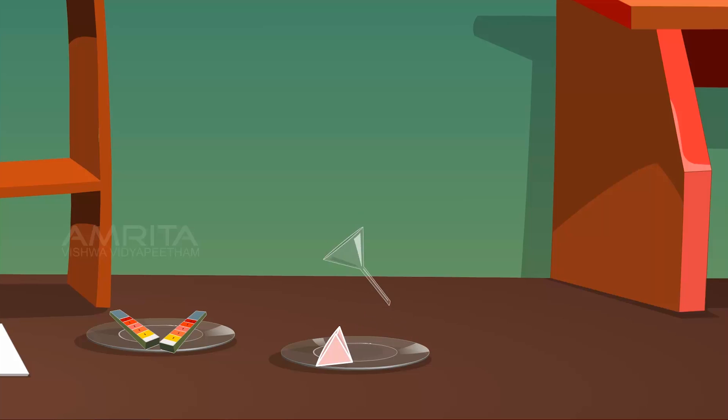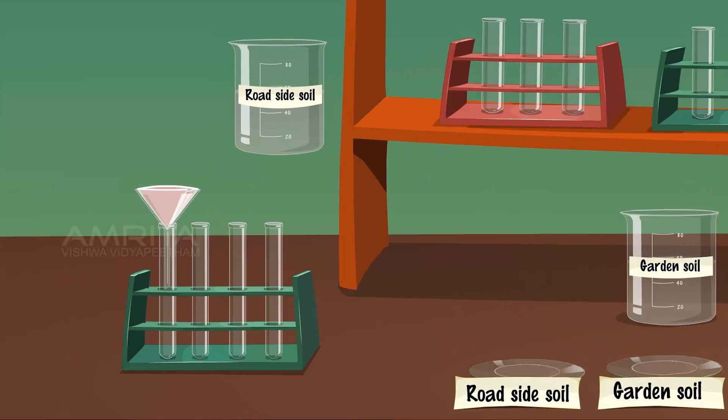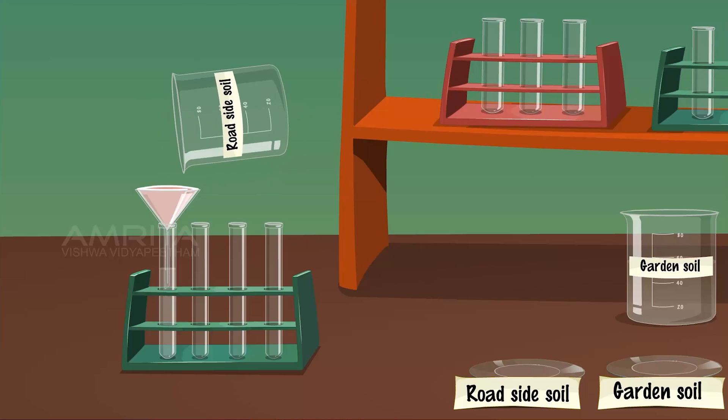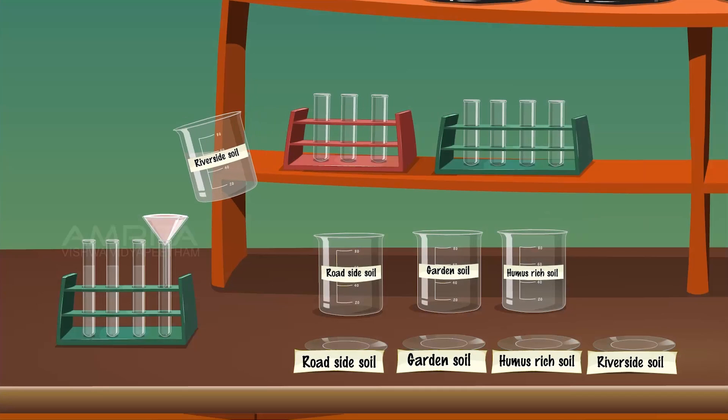Take a funnel, place a filter paper in it and keep it on a test tube. Take roadside soil solution and filter the solution through the filter paper and collect the filtrate in a test tube. Repeat the same procedure for other samples with filter paper.